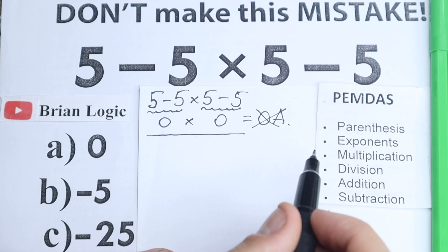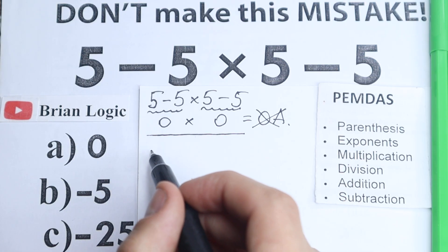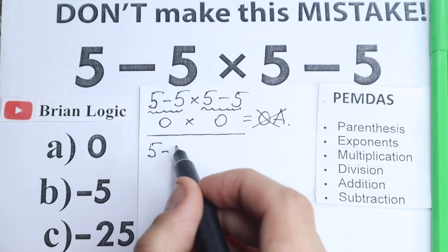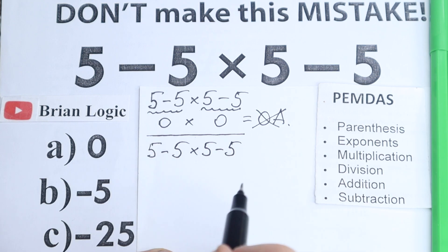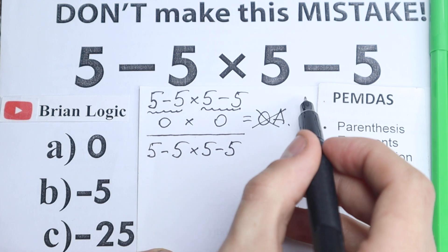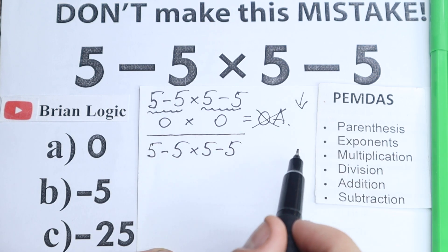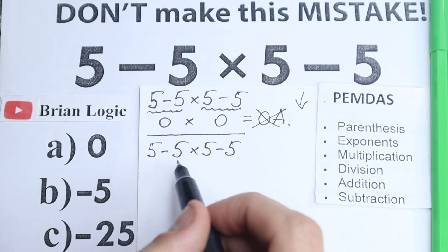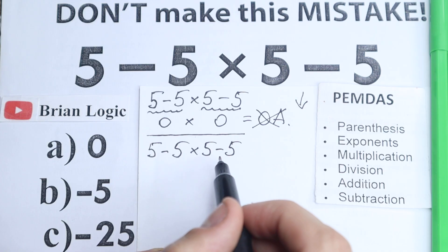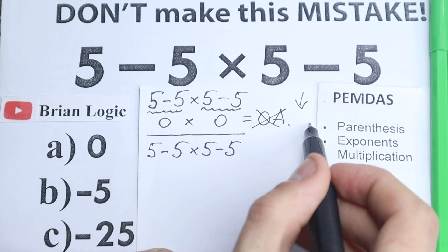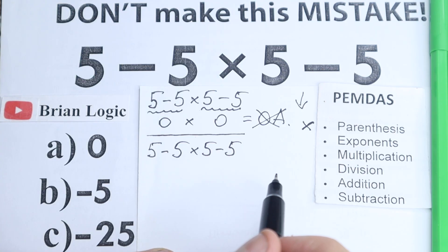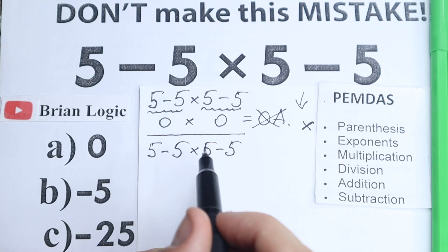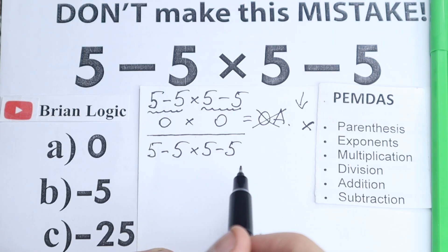Let's solve this question according to the correct order of operations. We have 5 minus 5 times 5 minus 5. PEMDAS works from top to bottom. First step: parentheses — do we have any? I don't see any, so we skip this step. Without parentheses we don't have more complicated groupings, so we reject this step.